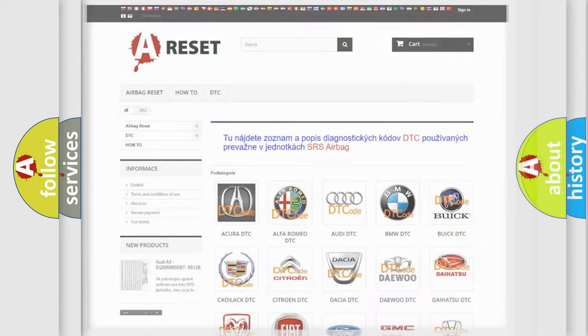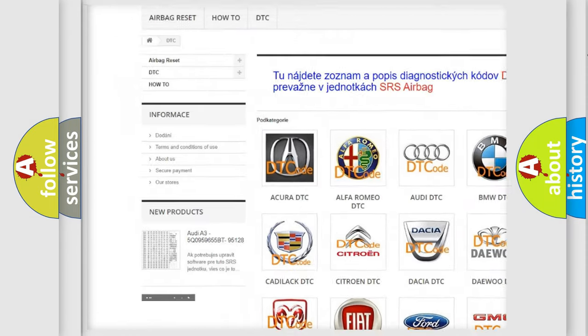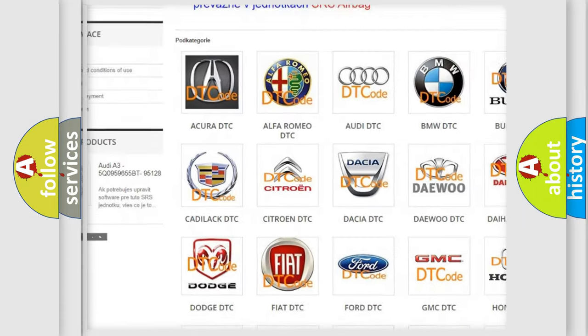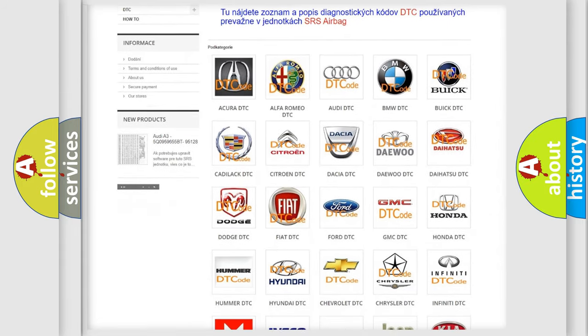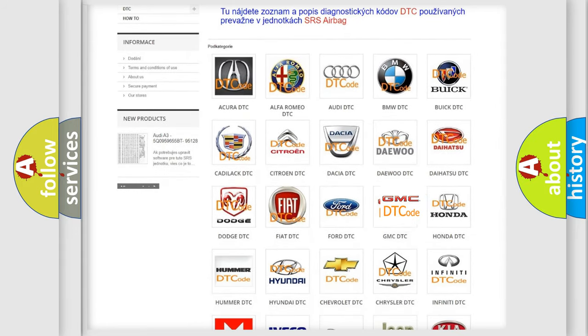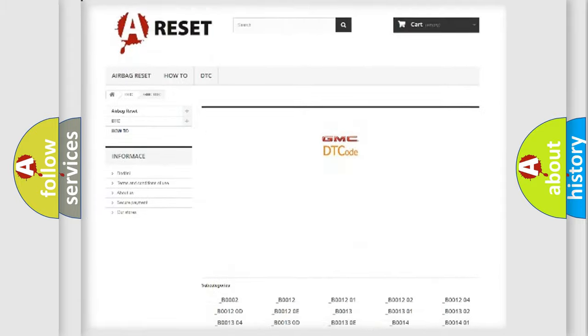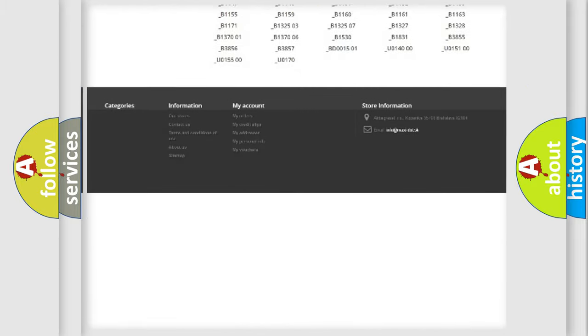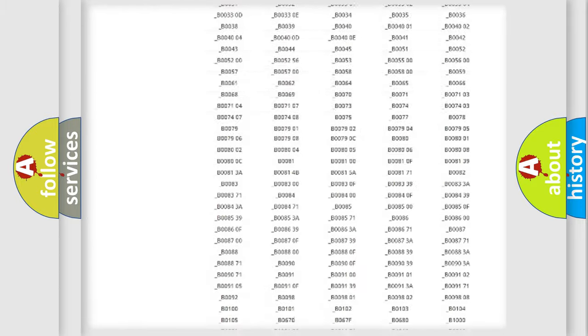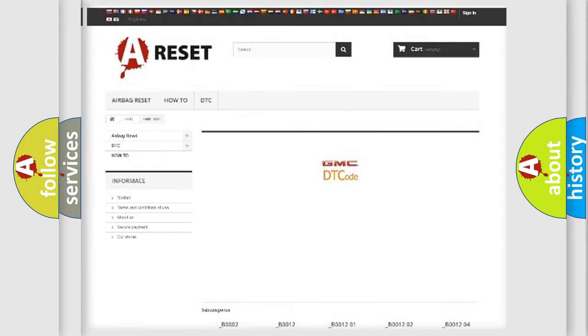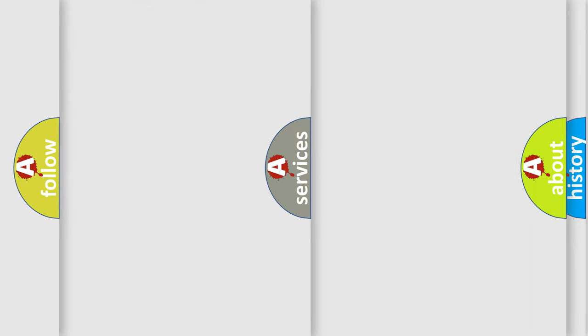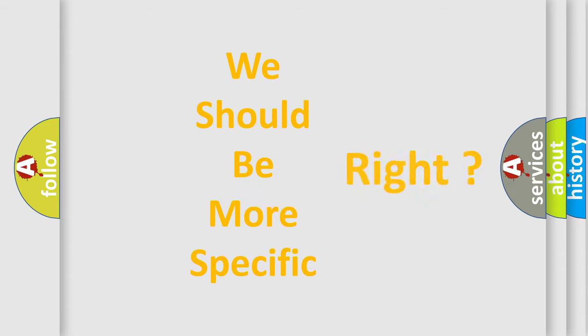Our website airbagreset.sk produces useful videos for you. You do not have to go through the OBD2 protocol anymore to know how to troubleshoot any car breakdown. You will find all the diagnostic codes that can be diagnosed in GMC vehicles, and many other useful things. The following demonstration will help you look into the world of software for car control units.